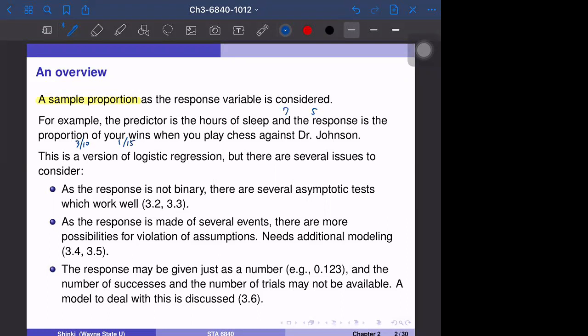So this is a version of logistic regression, because if we think about the 3 over 10 as 10 observations of 1-1-1 and 0-0-0-0-0-0-0, then it's a logistic regression. But there are several issues if these observations are originally the proportions.